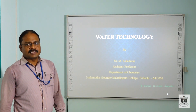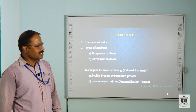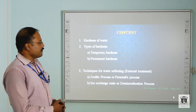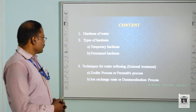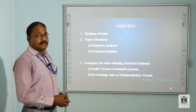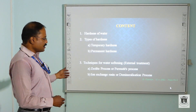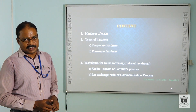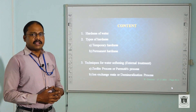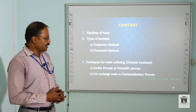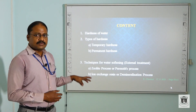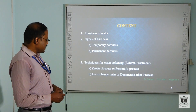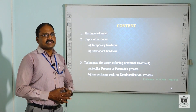In Water Technology we have so many titles. Out of those titles I am going to discuss only a few: the hardness of water and types of hardness. In the types of hardness we have temporary hardness and permanent hardness. We have various techniques in terms of external treatment and internal treatment techniques. I will look at only the external treatment — the zeolite process or permutit process, and the ion exchange resin or demineralization process.